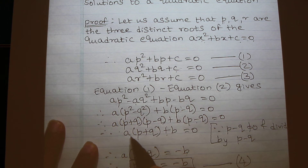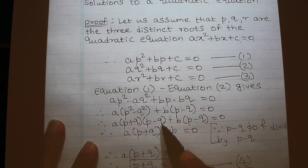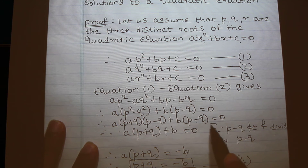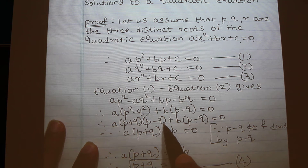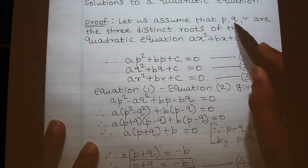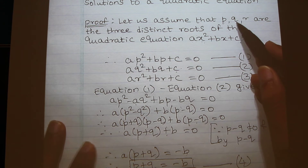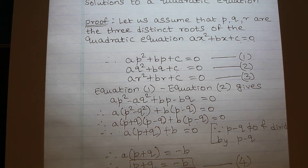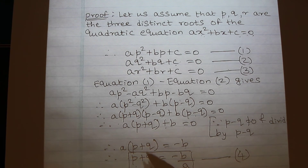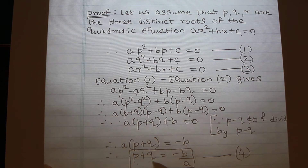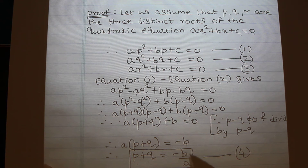Dividing throughout by (p − q), I get a(p + q) + b = 0. I can divide by (p − q) because p − q ≠ 0 — p and q are distinct roots, meaning p ≠ q. Therefore we get p + q = −b/a. Call that equation 4.